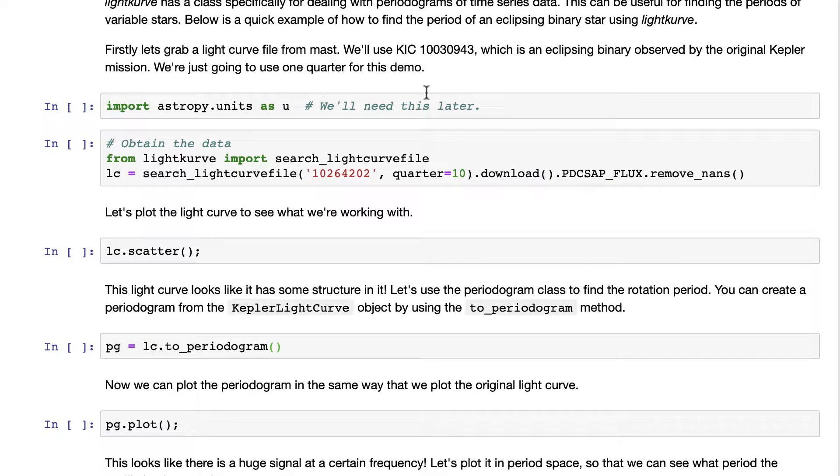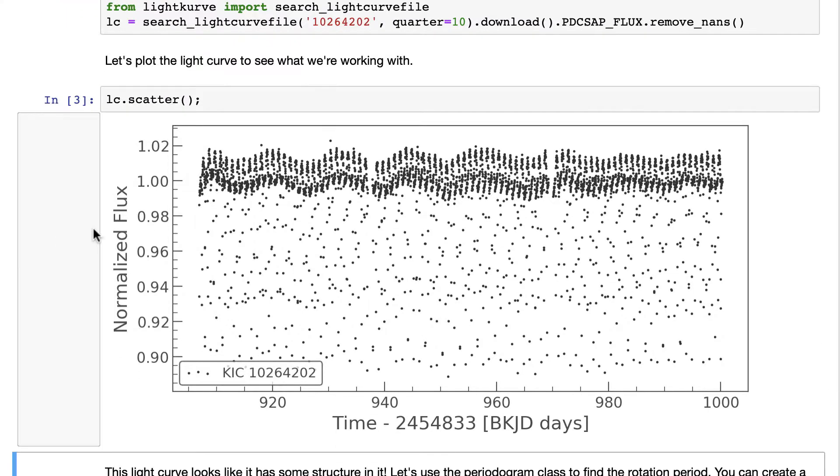So let's start with an example from Kepler, which we'll use the pre-search data conditioning SAP flux and do a little bit of our own pre-processing. And when we look at the light curve, we see that there's a lot of structure.